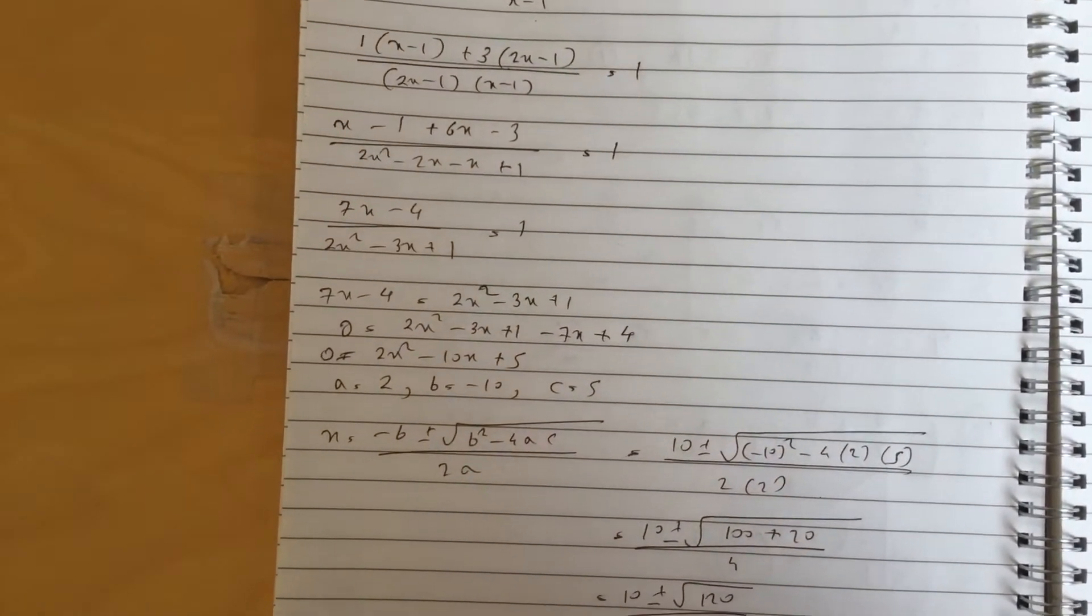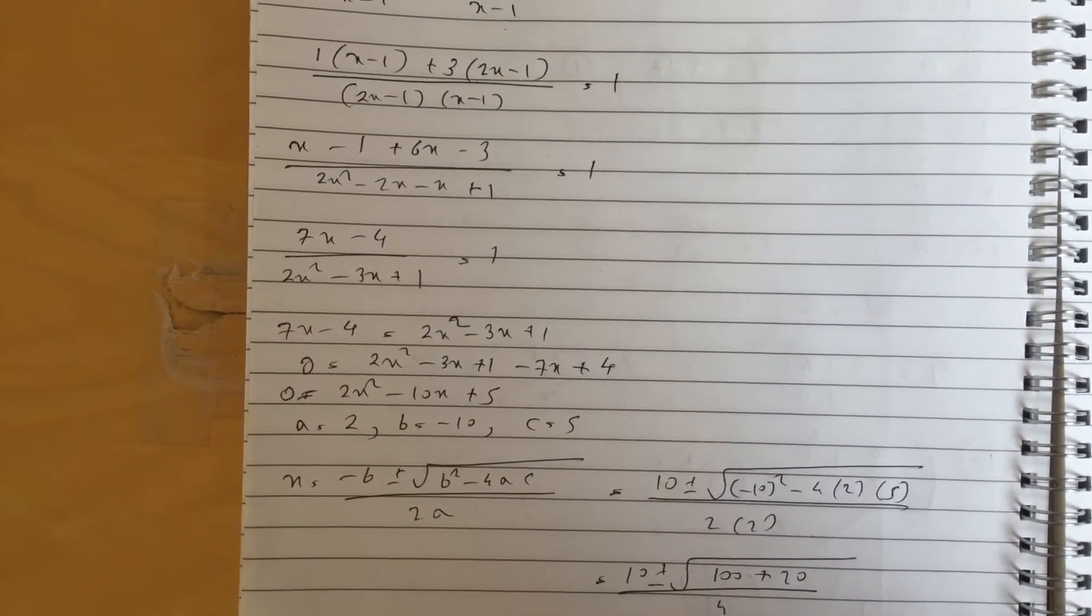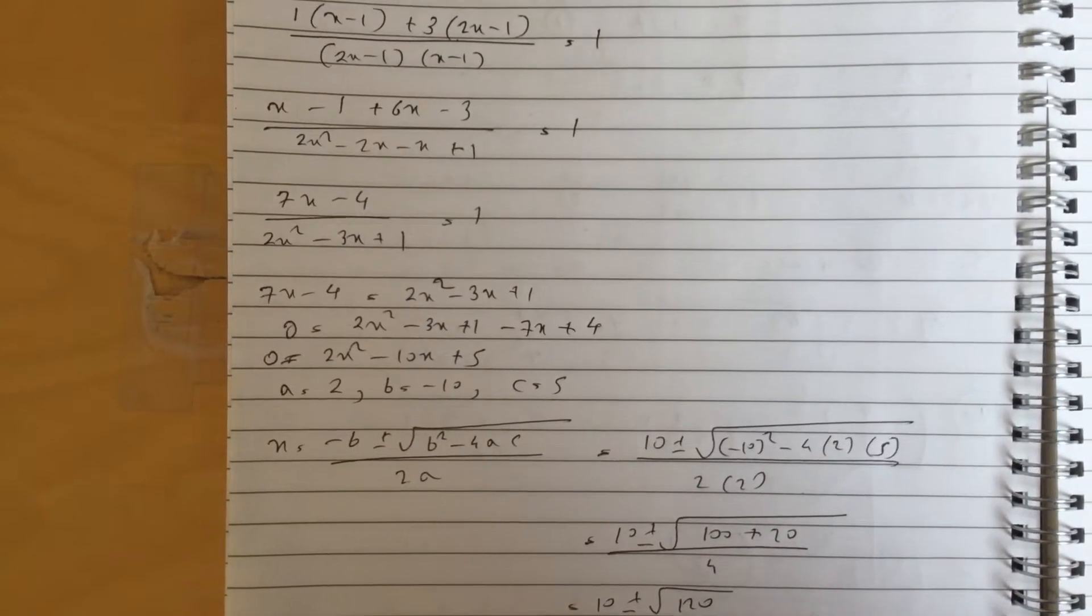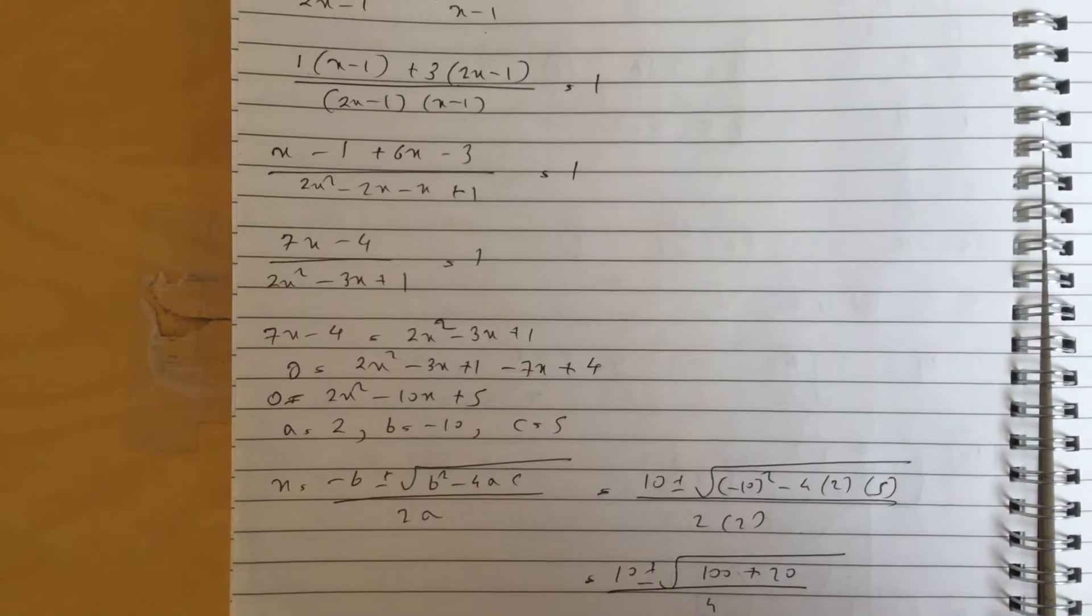Then I multiplied the denominator to the right hand side and brought the other terms to the right, then simplified it. You end up with 2x squared minus 10x plus 5. So a is equal to 2, b is equal to minus 10, c is equal to 5.